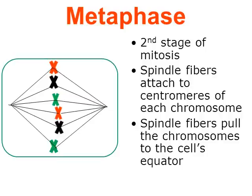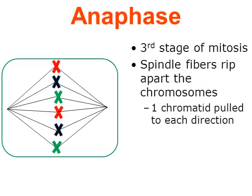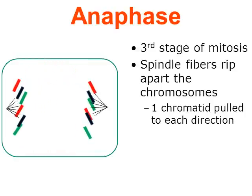Now we move on into anaphase — the third stage of mitosis. This really is the characteristic feature of anaphase: spindle fibers are going to rip apart the chromosomes. Remember that one chromosome is made from two chromatids — the two halves of a chromosome are called sister chromatids. Watching the animation, the sister chromatids get pulled apart: one chromatid gets pulled to the left, one gets pulled to the right. So you have a collection of chromatids on the left of the cell and another collection on the right.